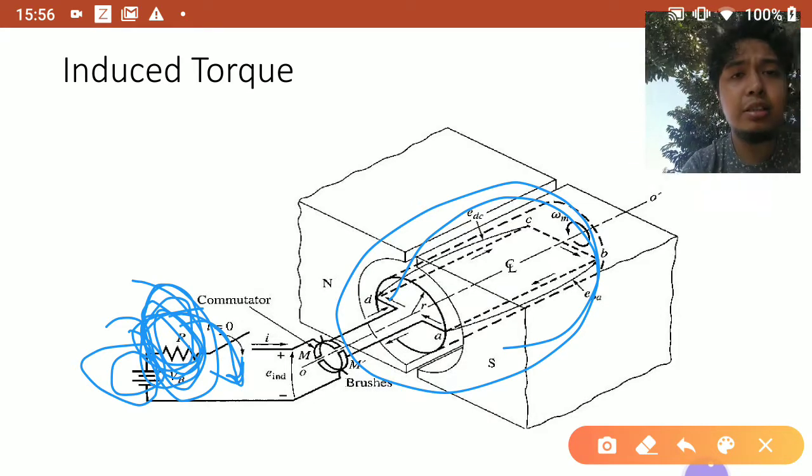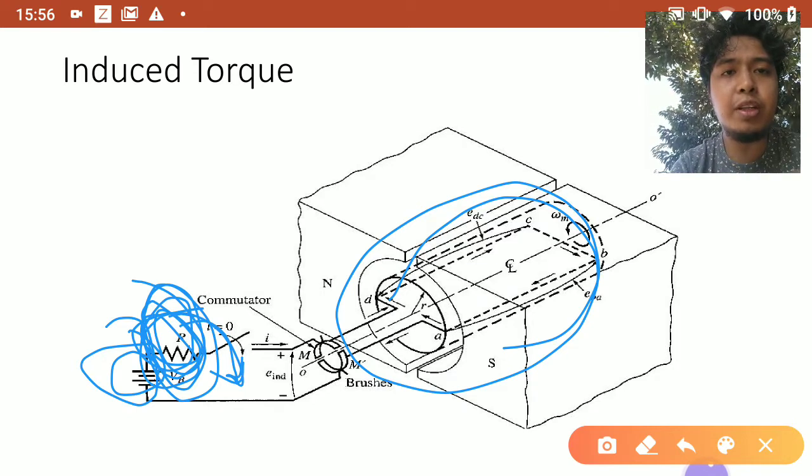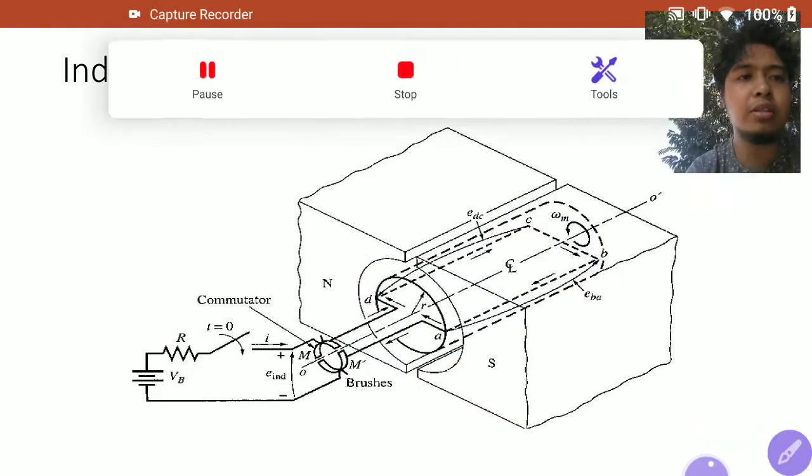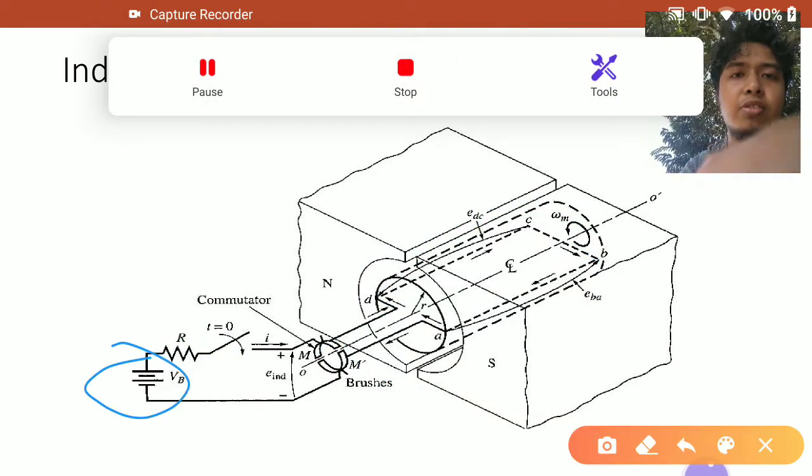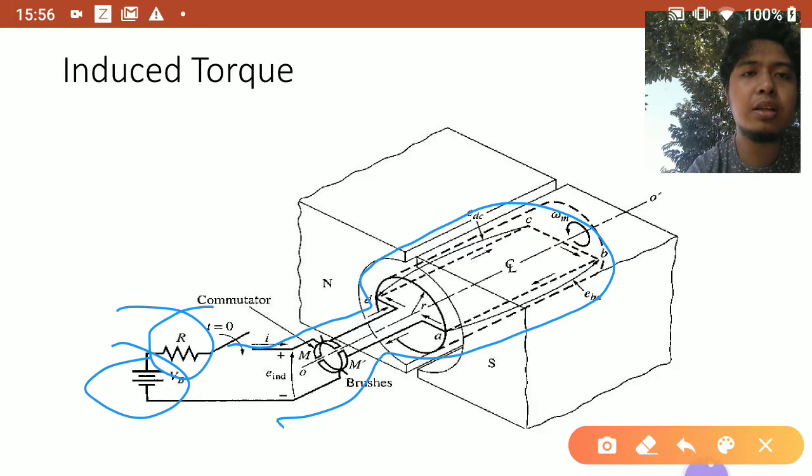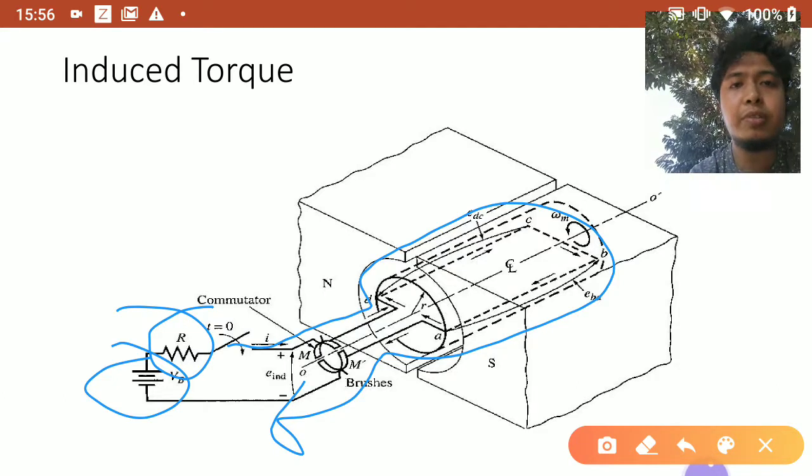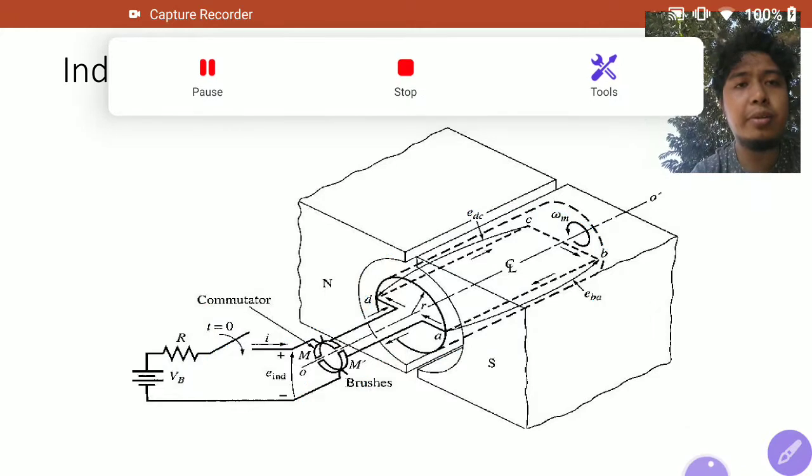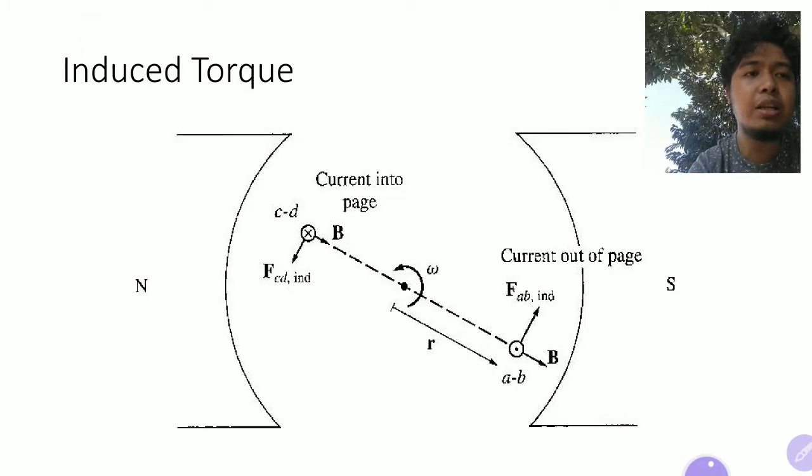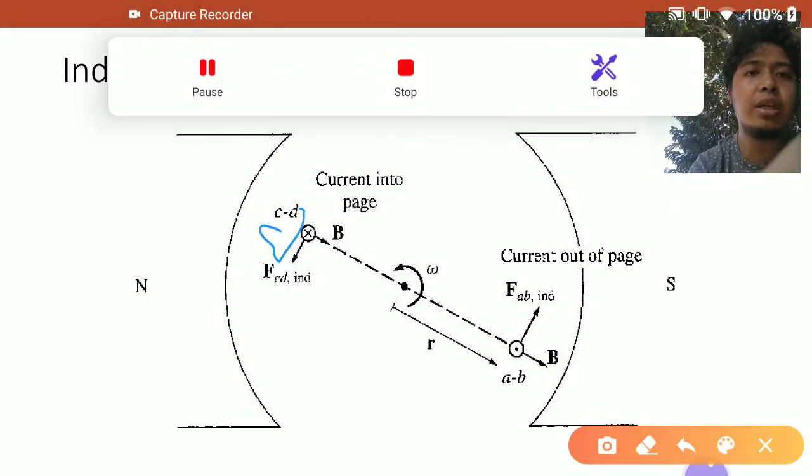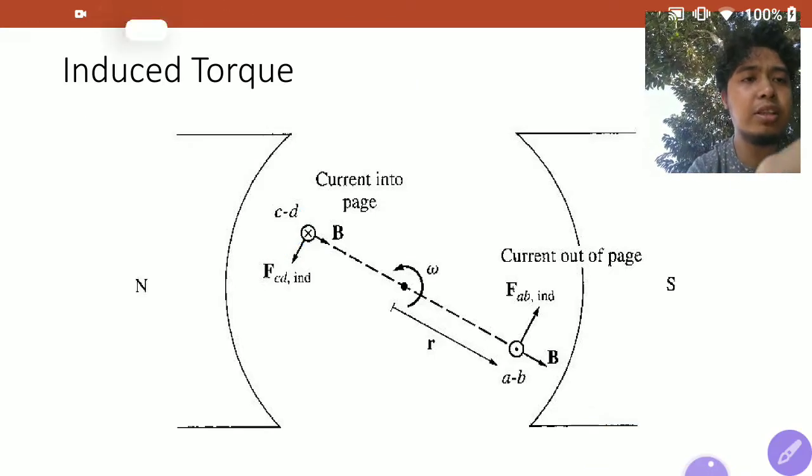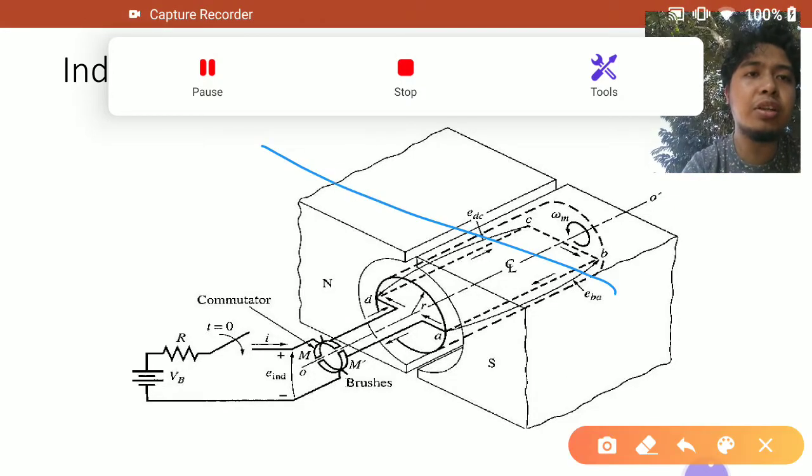And then from here, you now have a closed loop that goes from this source to this resistor to this loop. Sorry, I think I'll just redraw it. From this source to this resistor to this loop that goes this way. So that is how your current will flow. If we look at the cross section, I have the current going into the page and the current going out of the page in this perspective. So that is this cross section here.